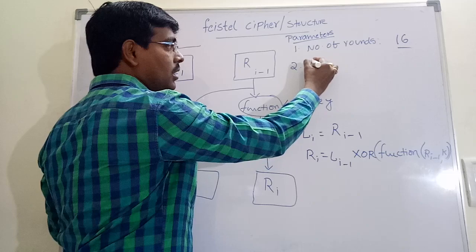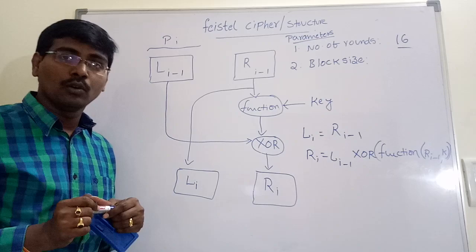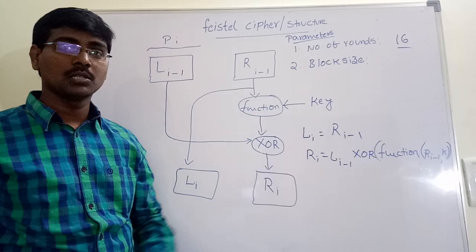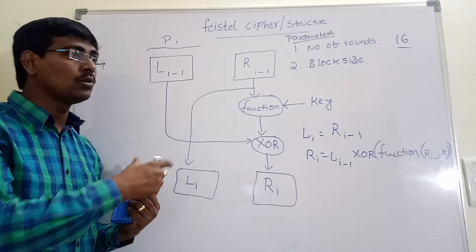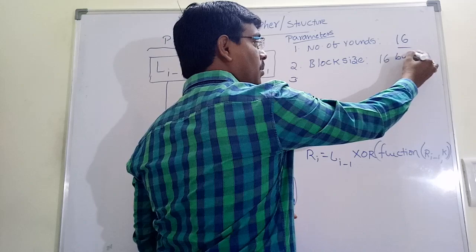Once number of rounds are identified, next we have to identify block size. So here Feistel Cipher follows block technique. That is, the total text is divided into different number of blocks. If block size increases, security also increases. But if the block size is much larger, both encryption and decryption performance decreases. So we have to select a fixed block size. Generally, block size of 16 bytes is preferable. Here 16 is the number of rounds. Here 16 bytes. 16 bytes of each block size is preferable.